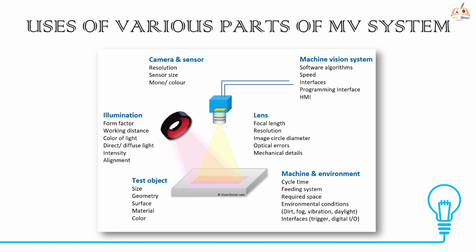The uses of various parts of the MV system: camera and sensor uses include resolution, sensor size, and monochromatic or color selection. Machine vision system software uses algorithms, speed, interfaces, and programming interface or HMI. Lens uses include focal length, resolution, image circle diameter, optical errors, and mechanical details. Machine and environment uses include cycle time, feeding system, required space, and environmental conditions such as dirt, fog, vibration, and daylight. Interfaces include trigger and digital I/O. The test object uses are size, geometry, surface, material, and color.